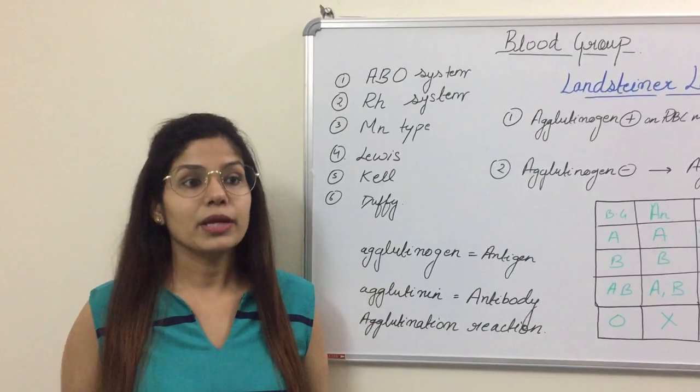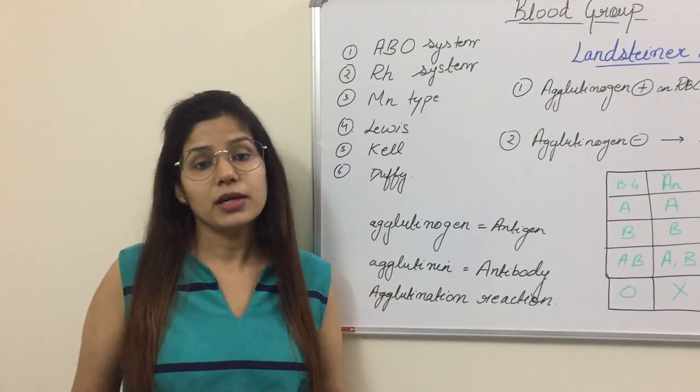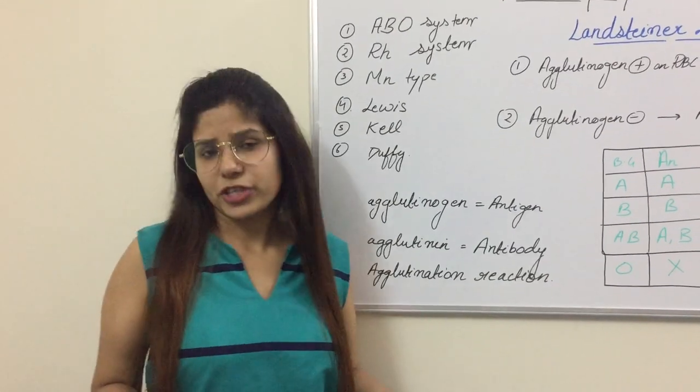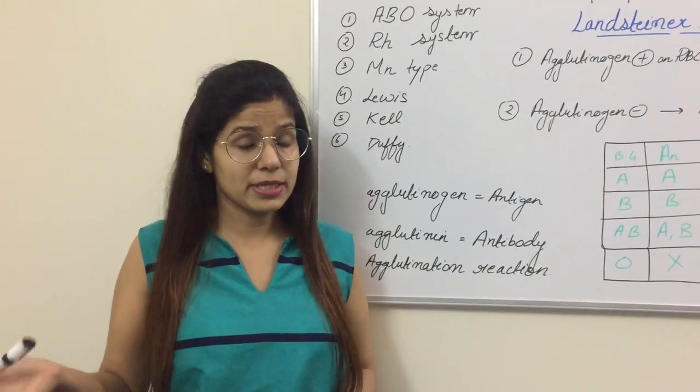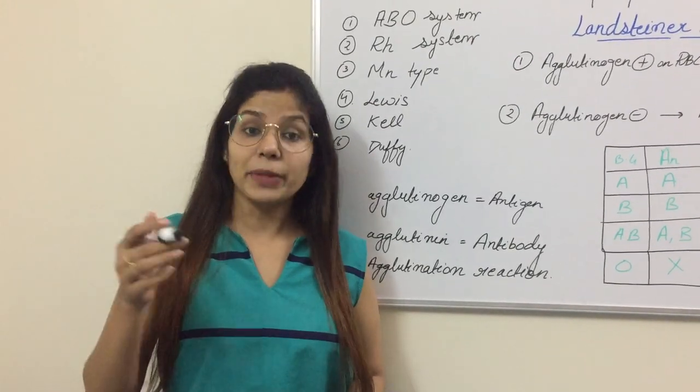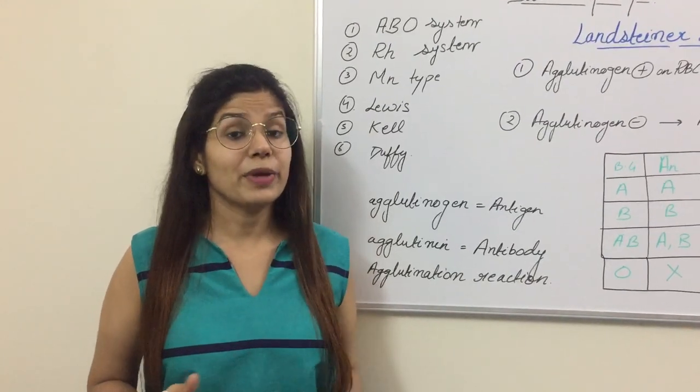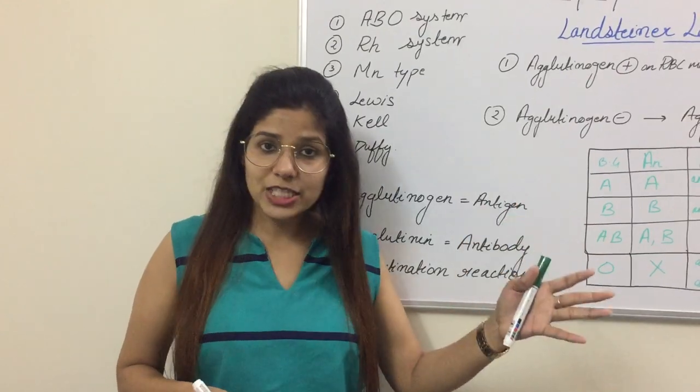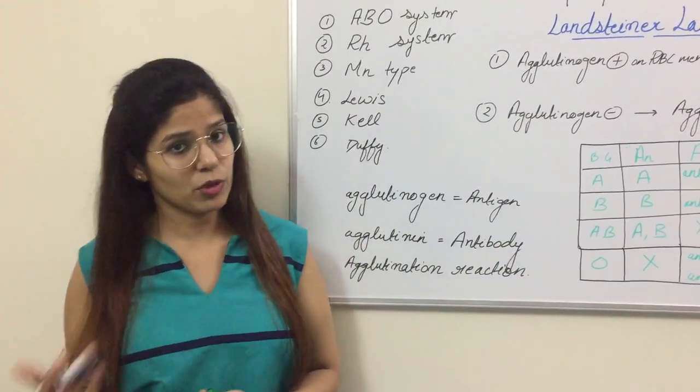First I would like to discuss the importance of the blood group system. The very first example is before blood transfusion reaction, like we are doing blood transfusion for chronic anemia, for treatment purposes, and for all major and minor operations. The second use is determination of RH compatibility reactions. And third is the medical legal aspect. The fourth is genomic studies as well as paternity disputes.